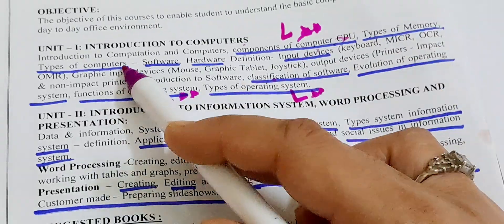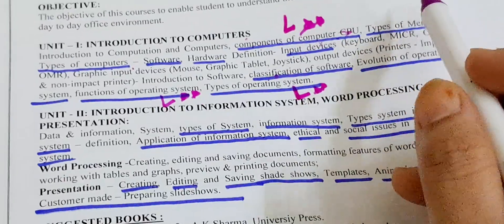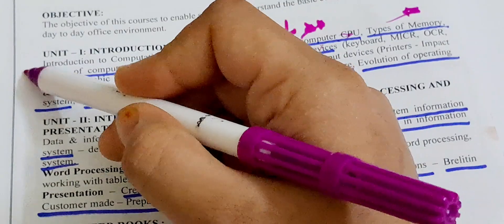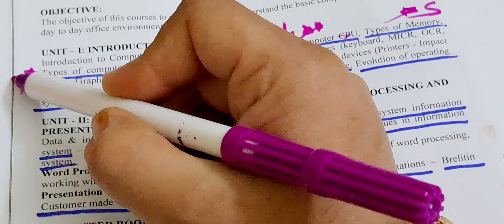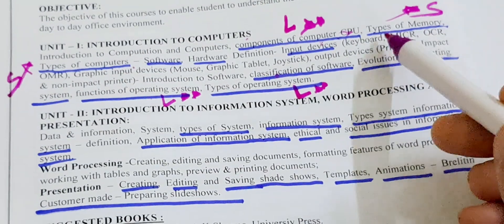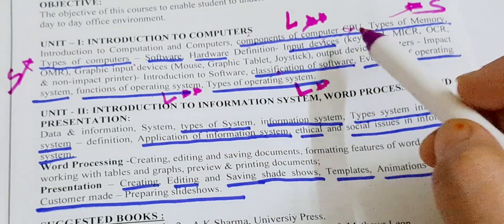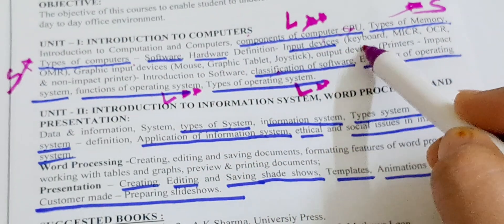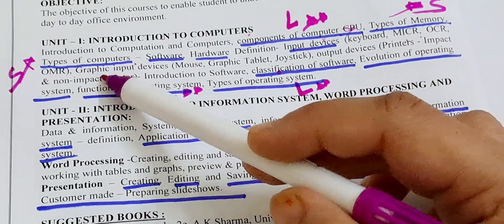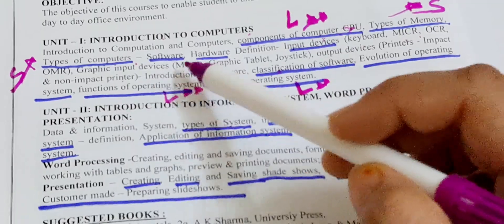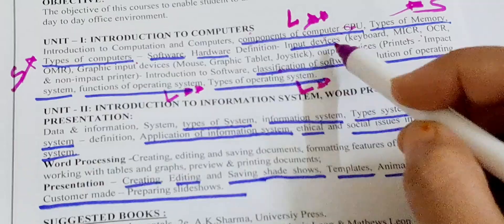Next are Types of Memory and Types of Computer — sometimes they will ask you for long answers and sometimes for short answers. I also include software, hardware, and input devices. For input devices, learn keyboard, MICR, OCR, OMR, mouse, graphic tablet, joystick, etc. Learn these for short answer questions.